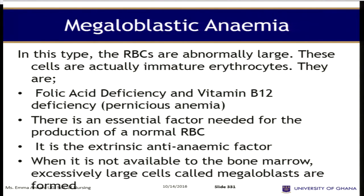Megaloblastic anemia — as the name suggests, the red blood cells are abnormally large. These cells are actually immature erythrocytes, caused by folic acid deficiency and vitamin B12 deficiency. There is an essential intrinsic anti-anemic factor needed for normal red blood cell production. When it is not available to the bone marrow, excessive large red blood cells called megaloblastic cells are formed.